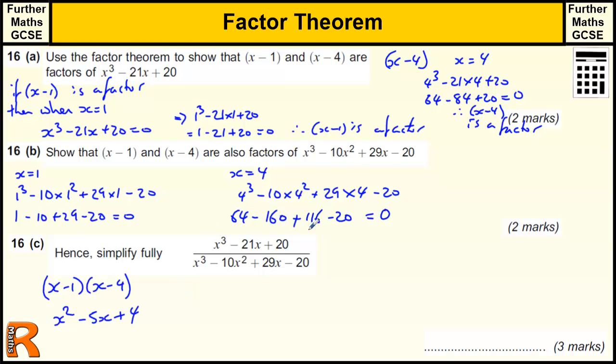So what must the other factor be? Well, it must be x plus 5, I think. Let's just check that, because 5 times the 4 makes 20. We get x cubed, we get minus 5x squared, plus 5x squared, so the x squared's cancel. We get plus 4x minus 25x, which is minus 21x, and that's right. So that's going to be the top.